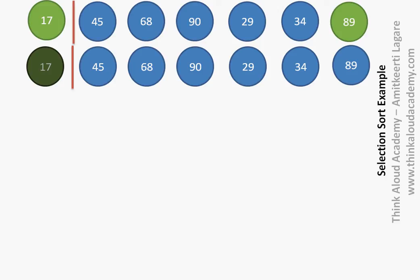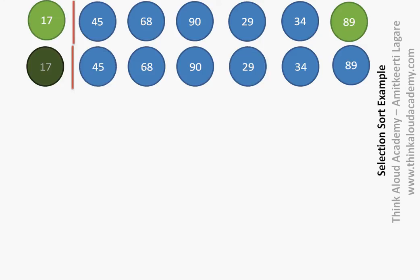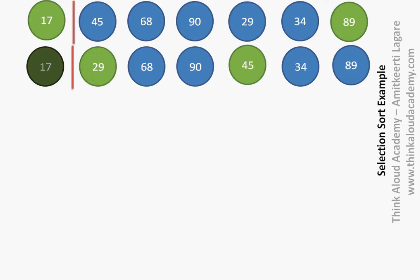Next we start with the leftover elements. We compare the second element, 45, with 68 — 45 is minimal. Then 45 with 90 — still 45. Then 45 with 29 — 29 is lesser. Then 29 with 34 — 29 is smaller. And 29 with 89 — 29 is smaller. So 29 is the smallest in the leftover elements; we replace the second element with 29. So 45 goes to the right and 29 goes to the left. We have sorted two elements after the second iteration.